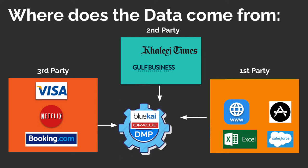To give an example of how third-party data helps advertisers: Visa provides information to DMP — if I use a Visa card to usually purchase food online, Visa passes my device ID to Oracle BlueKai, and a food delivery company can target me with app install campaigns. Similarly, if I book a ticket to Amsterdam on Booking.com, that device ID is passed to DMP and hotels and car rental companies in Amsterdam can start targeting me. This is the largest chunk of data in DMP and is termed third-party data.